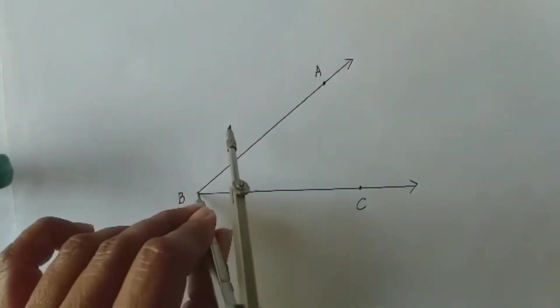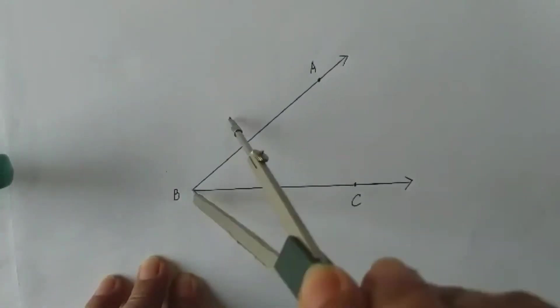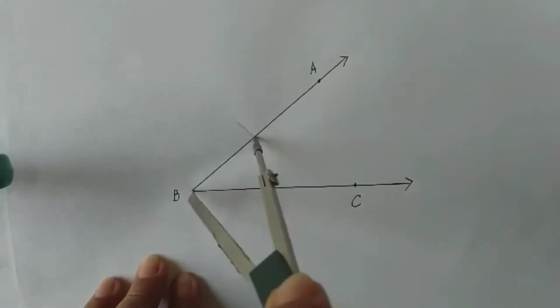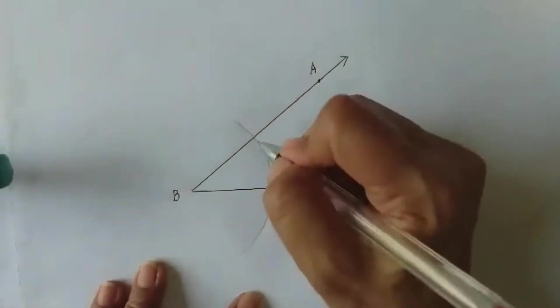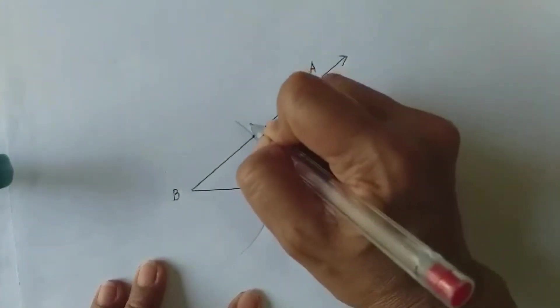Set the compass opening, not too wide. Position the compass point at the vertex point B and draw an arc intersecting sides BA and side BC.